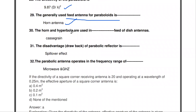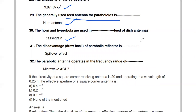The horn and hyperbola are used in the Cassegrain feed of dish antennas. There are different types of feeds: offset feed, front feed, back feed, and others. The horn and hyperbola are used specifically in the Cassegrain feed of dish antennas.